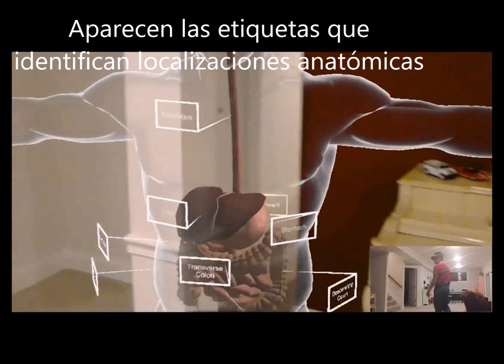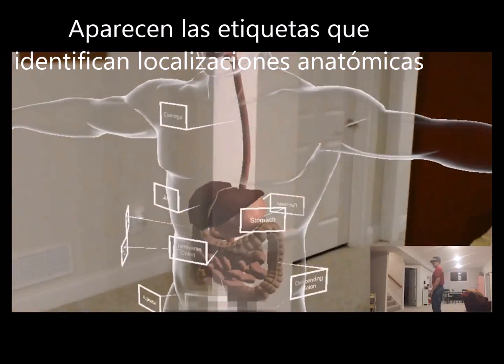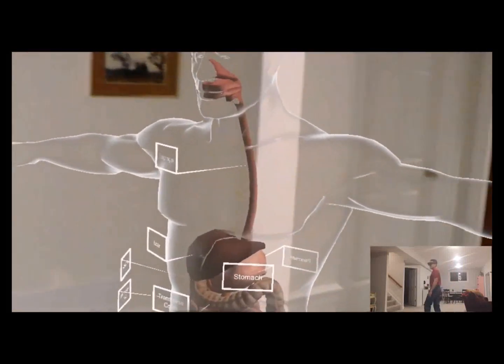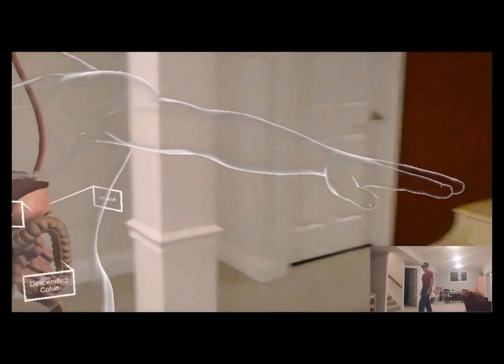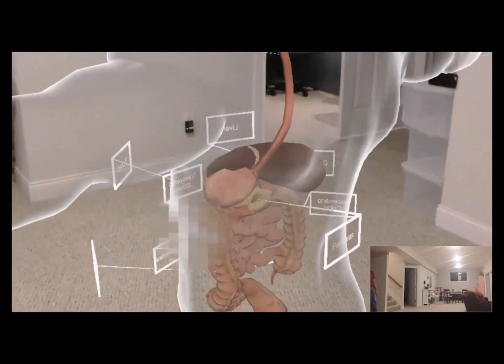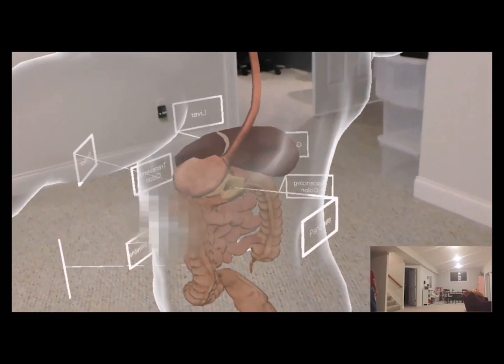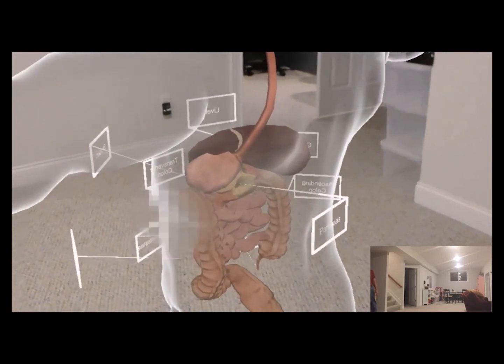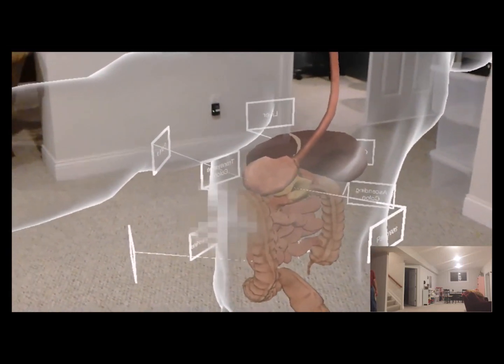In gross anatomy or even in surgery, we are often limited to a front-facing view of these organs. With HoloLens, you can walk around the patient for a more comprehensive perspective. Notice how the best view for the pancreas may be from behind the patient model.